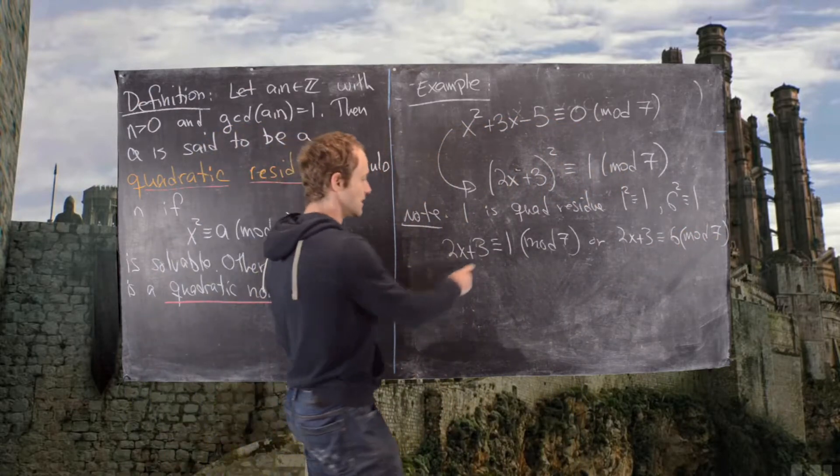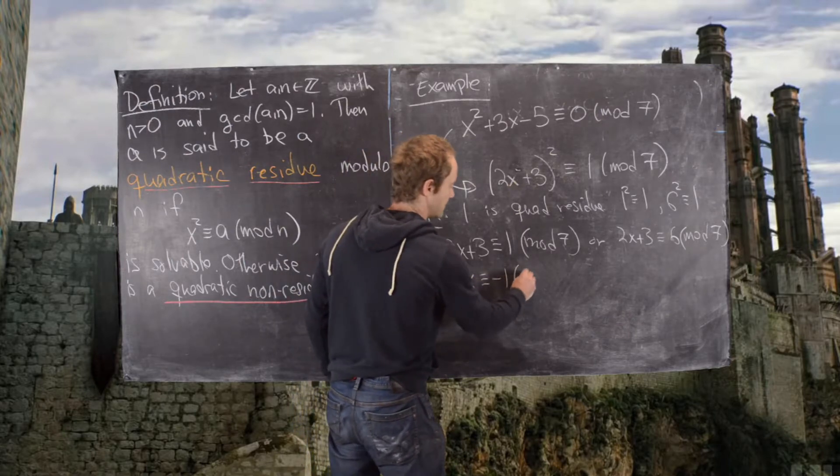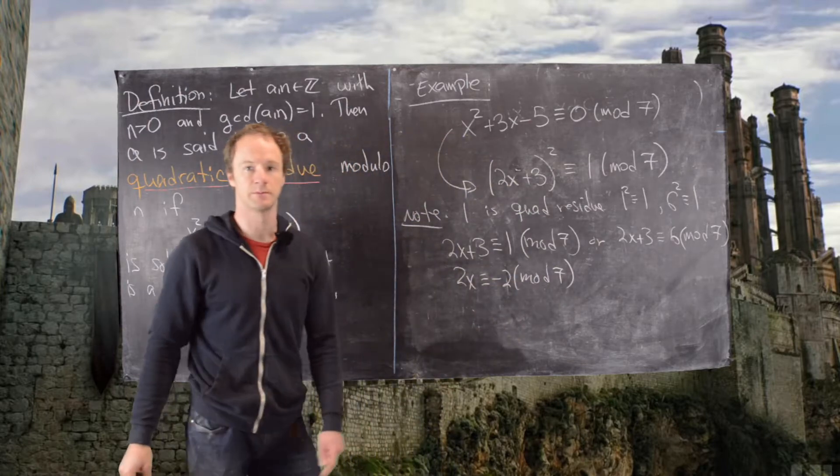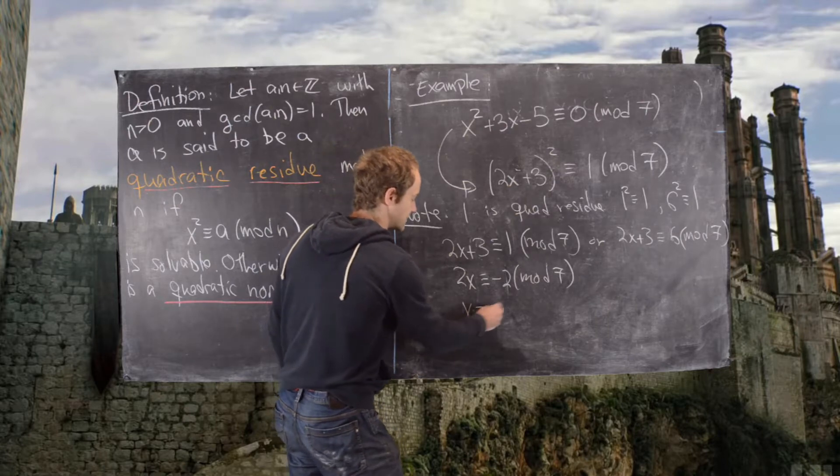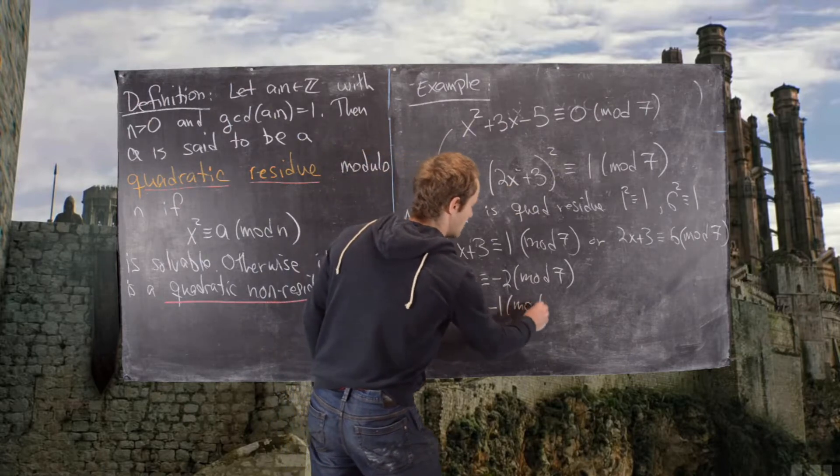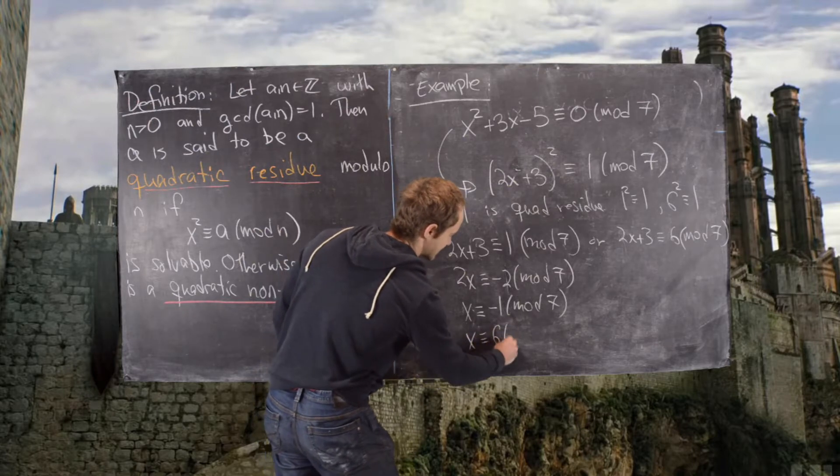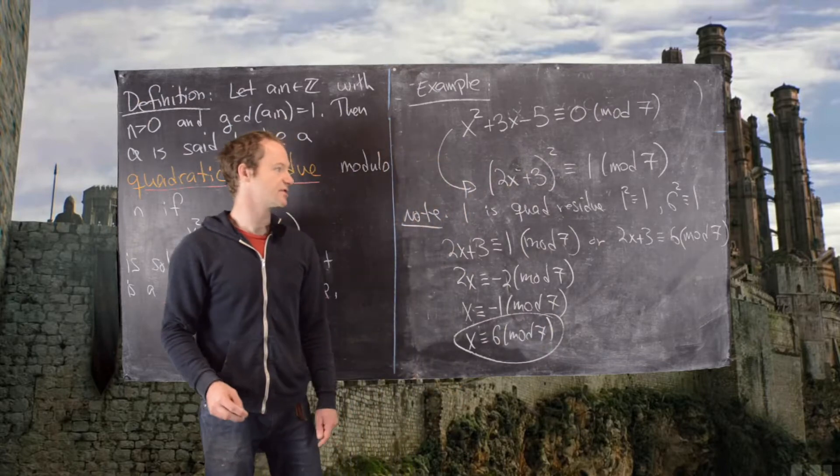Now what we can do is move the 3 over. So we get 2x is congruent to negative 2 mod 7. But now it's obvious that this makes x congruent to negative 1 mod 7, or maybe better yet, x is congruent to 6 mod 7. So there we go, that's one solution.